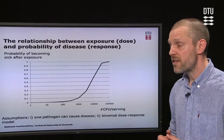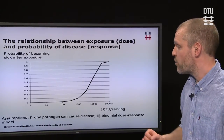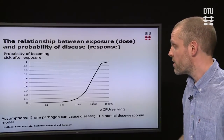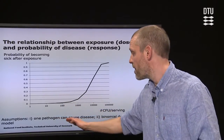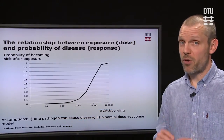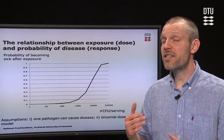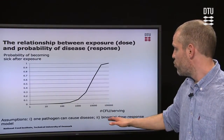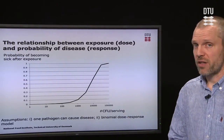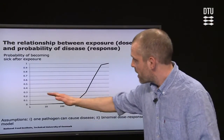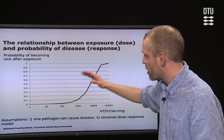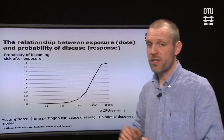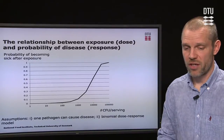What you need to know at this level is that we have some assumptions in the dose-response relationship. One of the assumptions is that you can get sick from one pathogen — the probability is extremely low, but it's still there. We have also used the binomial dose-response model, and if we do that, we get this shape where an increased exposure will increase the probability of becoming sick after exposure.